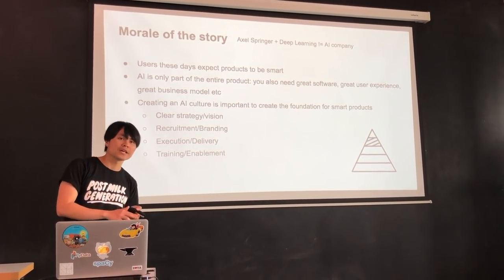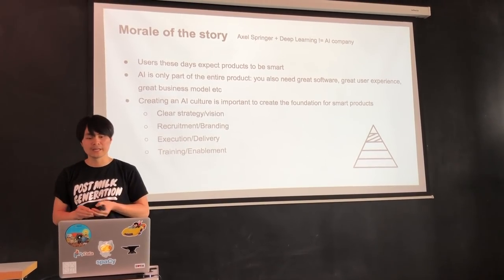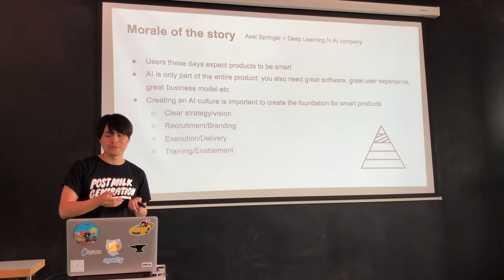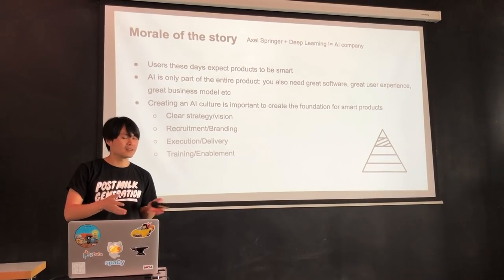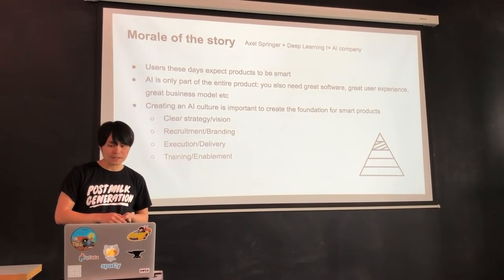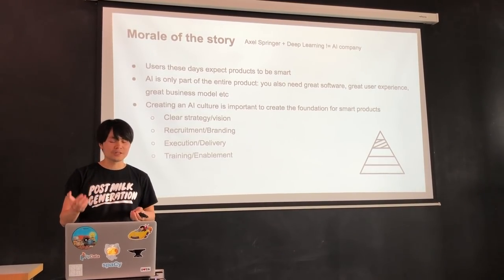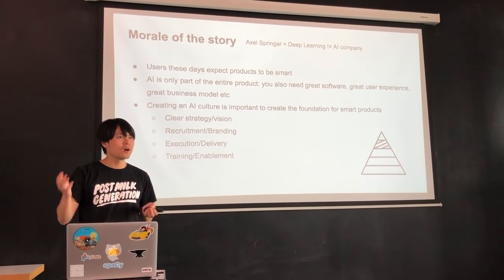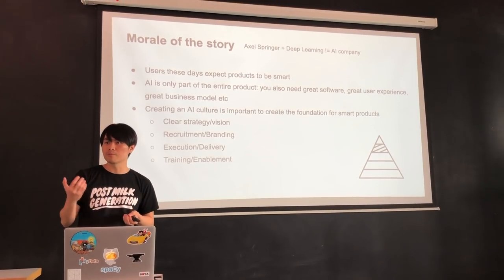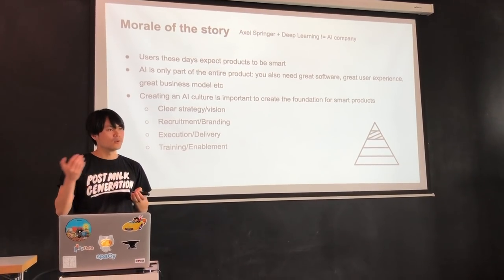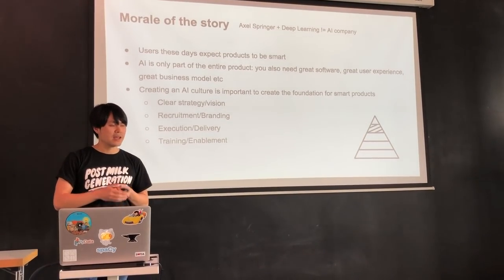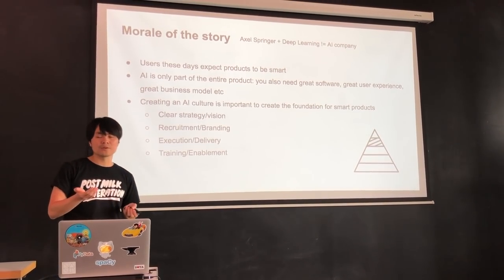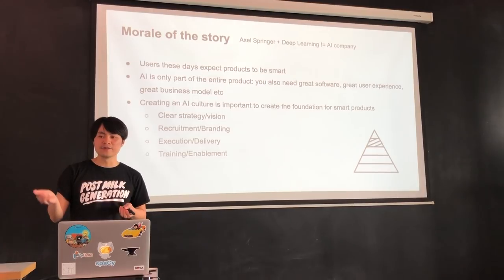What we've learned is that these days, when we create products, people expect them to be smart. AI is only a part of the product identity — it's a technology that needs to be integrated with great user experience, great software, and a business model. And to do this, we need a culture that supports all these things: a clear strategic vision for how Axel Springer looks in five years, how our products will look, whether they'll be smart or not — as well as a clear recruitment strategy.